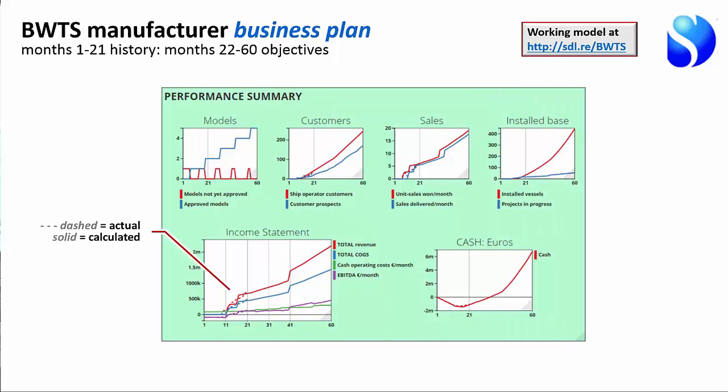So this is some business plan results for this company. You'll notice we've got the number of models they're planning to offer, the number of customers—this is actual customers and this is prospective customers who might buy from them. This is their actual sales in units, the installed base in units in the ships. This is the company's income statement: revenue, cost of goods, the green line is the cash operating expenses, and the purple line is the cash profit. And this is the actual cash. So we're losing money, then we start making money and get our cash back, and then we end up hopefully making a lot of cash.